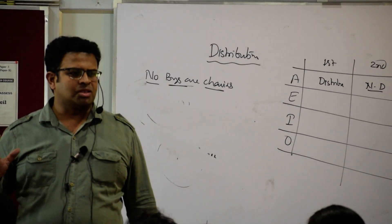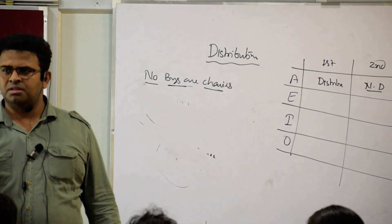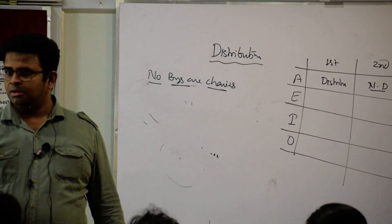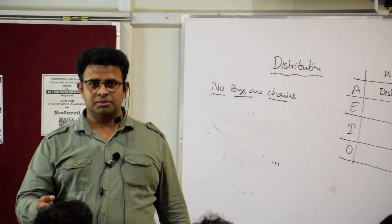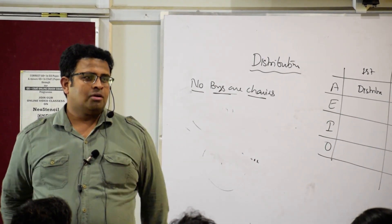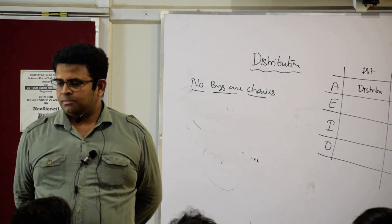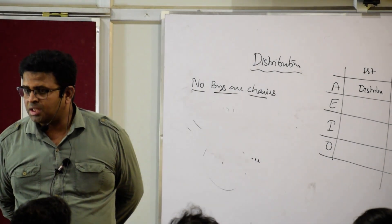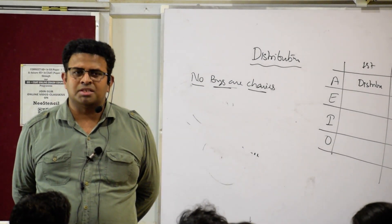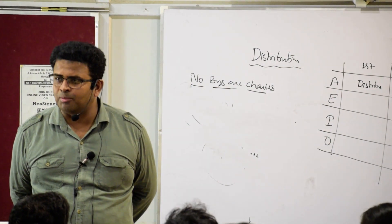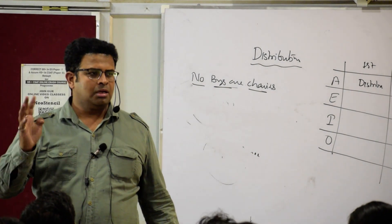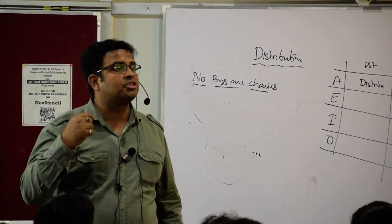How can you distribute 6 bananas? You can distribute: 1 banana, 2 bananas, 3 bananas, 4 bananas, 5 bananas, 6 bananas, or no banana at all — that is 7 ways. Whenever you have 6 same things, you can distribute them in 7 ways, because giving zero is also a form of distribution.